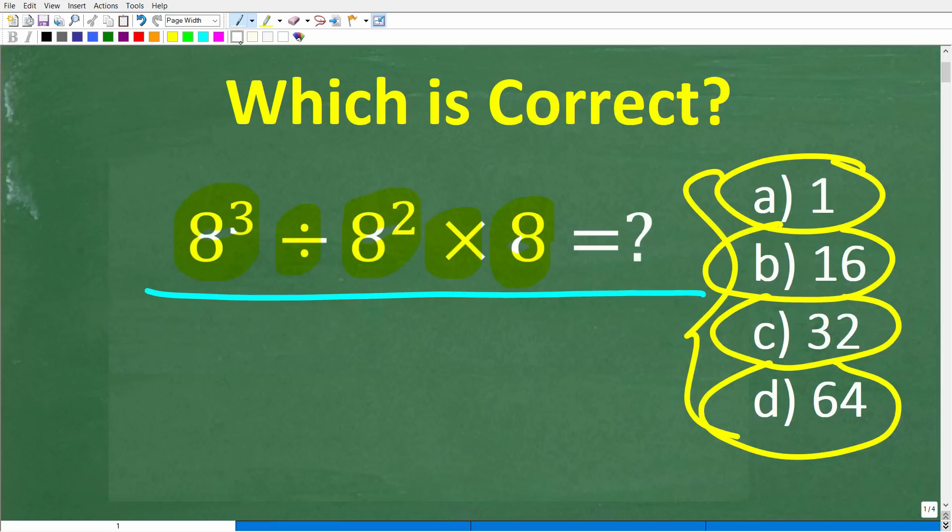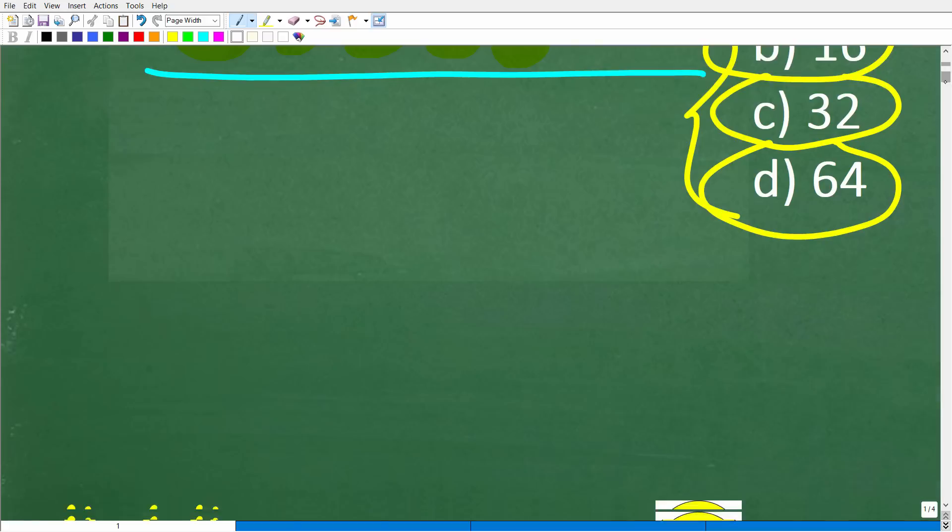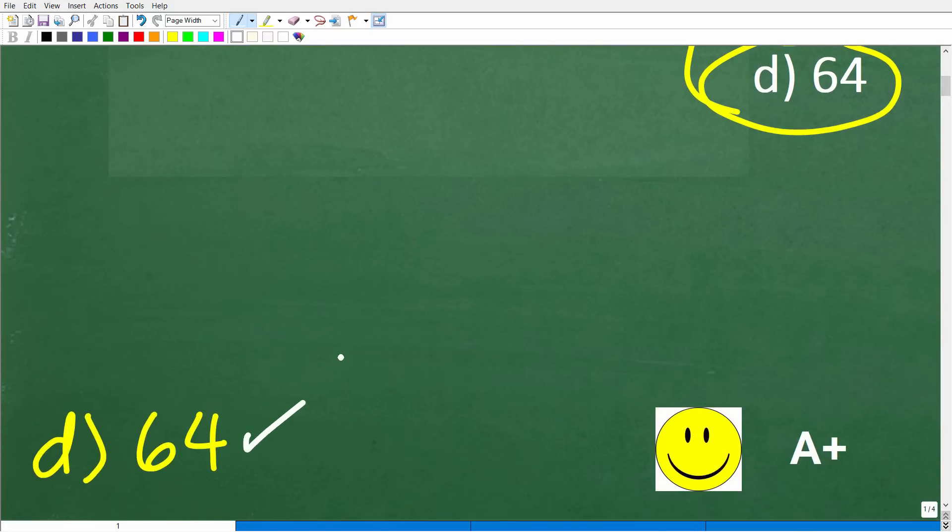All right, so once again, we have 8 cubed divided by 8 squared times 8. Let's go ahead and take a look at the answer. The correct answer here is D, which is 64.